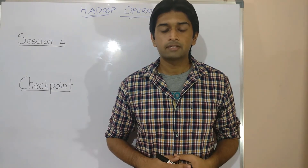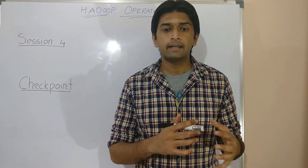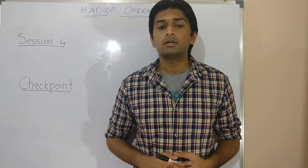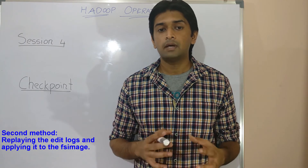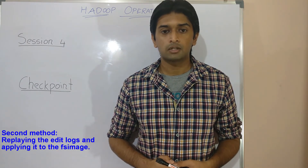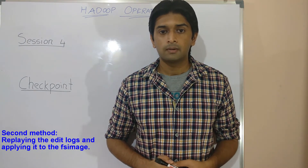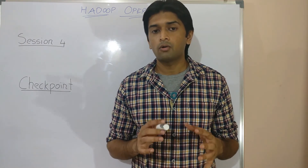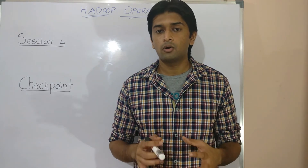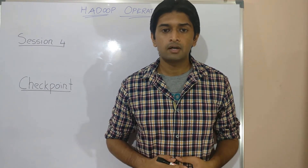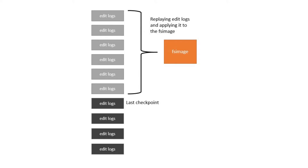Instead of writing the file system state directly from RAM, the name node here performs an edit logs replay from the last checkpoint. Since all the file system transactions are logged in the edit files, the name node would periodically perform an edit logs run from the last checkpoint, reading all these transaction logs and then applying them to the FS image.